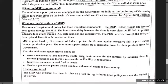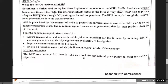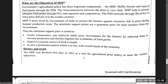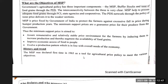What are the objectives of MSP? What is the government's purpose behind keeping a Minimum Support Price? The government agriculture policy has three components: MSP, buffer stock, and issue of food grain at PDS. There is inter-connectivity between these three. MSP helps to procure adequate food grain through FCI, state agencies, and cooperatives.